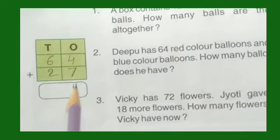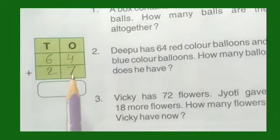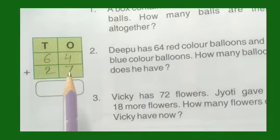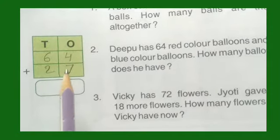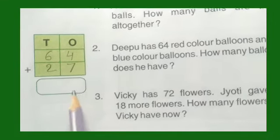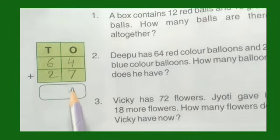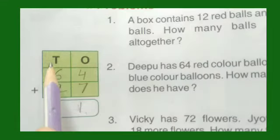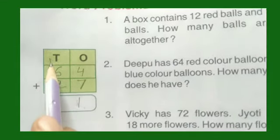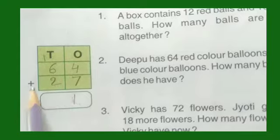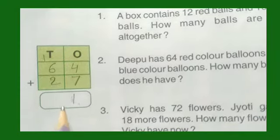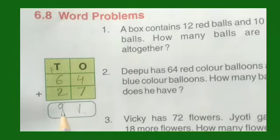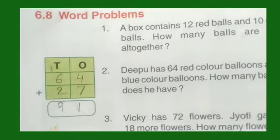How many balloons does he have? So what do we do? Addition. In the ones house, 7 plus 4 is 11. So we write only 1 here and 1 is carried to the tens house. Then 6 plus 2 is 8, plus 1 carried is 9. So there are 91 balloons.